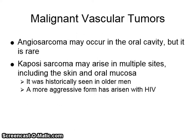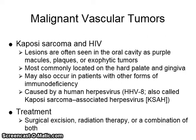Malignant vascular tumors: angiosarcoma may occur in the oral cavity, but it is rare. Kaposi's sarcoma may arise in multiple sites, including the skin and oral mucosa. It was historically seen in older men, and a more aggressive form has arisen with HIV. Lesions are often seen in the oral cavity as purple macules, plaques, or exophytic tumors, most commonly located on the hard palate and gingiva. It may also occur in patients with other forms of immunodeficiency.